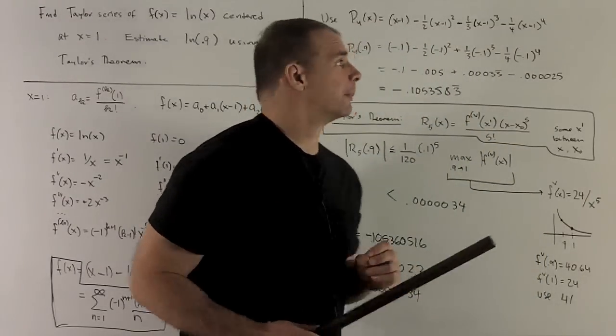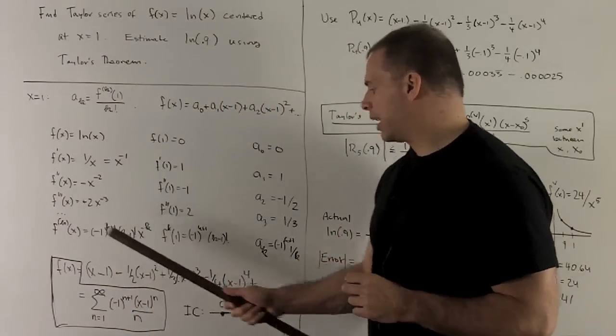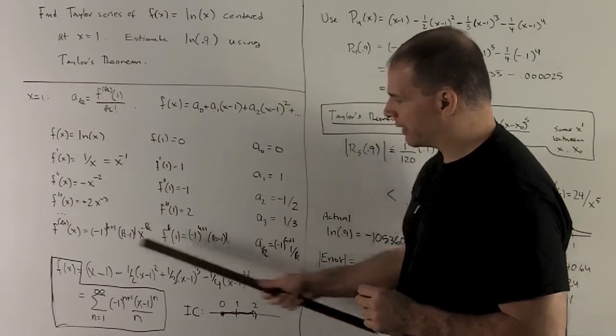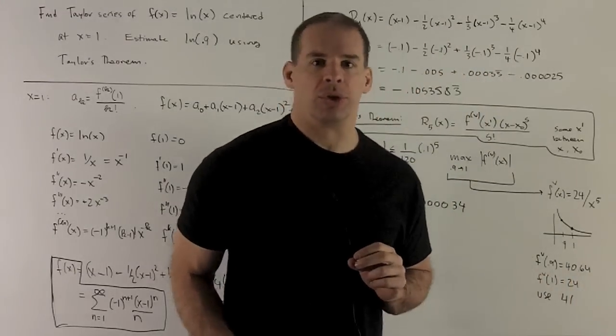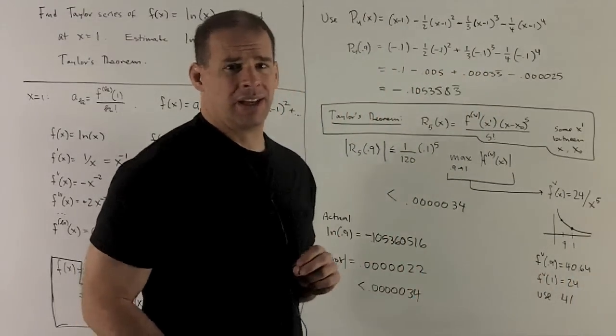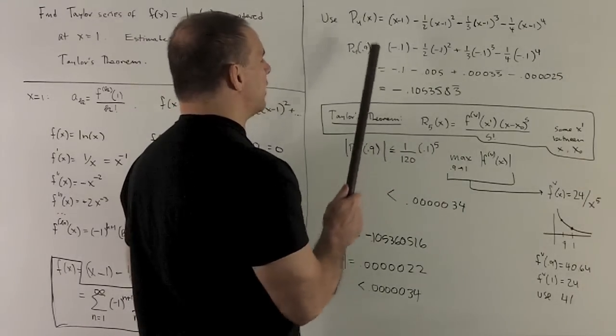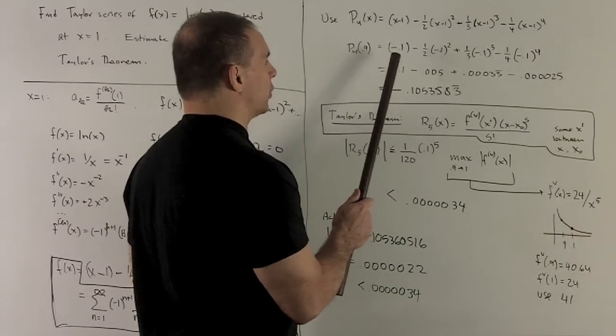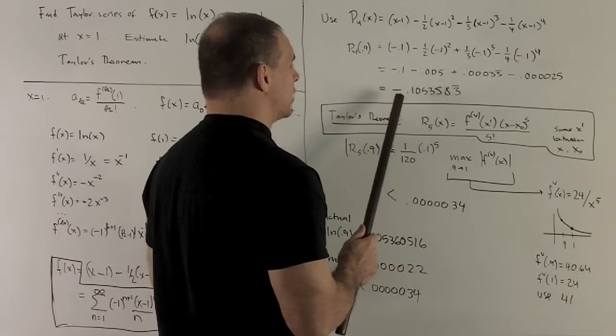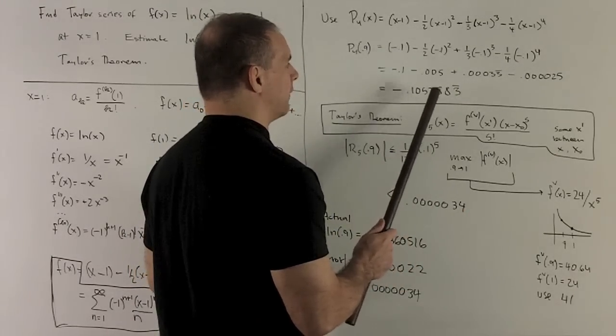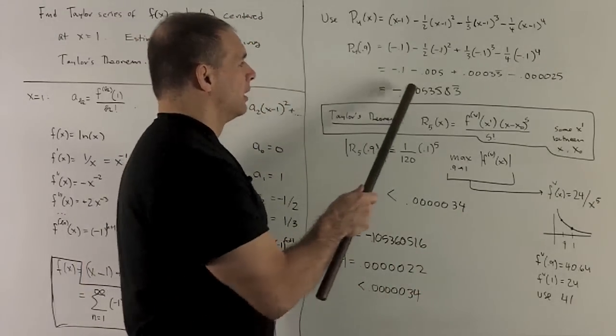Let's do an estimate. For here, I've worked out up to the fourth power, we have that written down, so we'll just use that as our function we'll use to estimate. So that's going to be the fourth Taylor polynomial. I put 0.9 in there, and so all of our x minus 1s will turn into minus 0.1s, and then when I evaluate, I get minus 0.105358, and then that 3 repeats on forever. So that's our estimate.